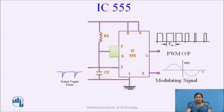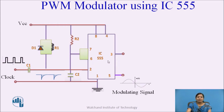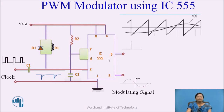The modulating signal is applied to pin number 5, and we get the output at pin number 3 of this IC. First, the clock signal is applied to the differentiator, which generates positive and negative spikes. The positive spikes are bypassed through diode D1, and the negative spikes — the negative trigger — are applied to pin number 2 of IC555. When this negative trigger is applied to pin number 2, the output of this IC becomes high.